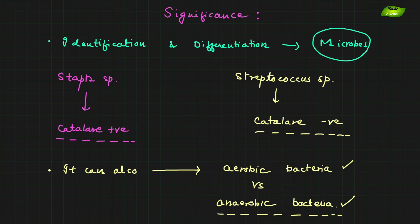Staphylococcus species are definitely catalase positive, and Streptococcus is catalase negative. These known organisms can be used as positive and negative controls respectively. It is important that when using a bacteria as a control, you know exactly which strain you are using — that ensures a proper procedure for performing this reaction.